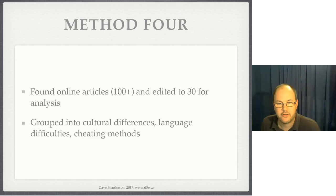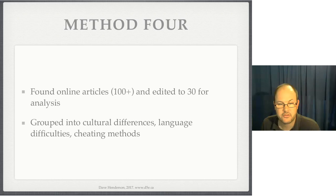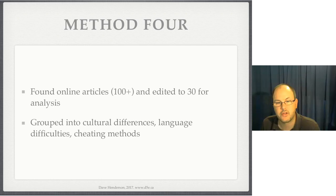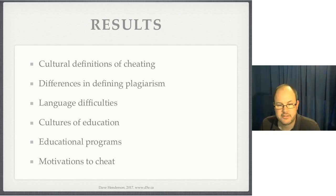I found over 100 articles. I edited them down to 30 by removing ones that dealt with English ethnicity or nationality rather than English the language. I wanted to find ones focused on academic dishonesty in North America and had to remove ones that talked about academic dishonesty in other places. I also wanted articles about situations we would be familiar with. I put them into three general groups where the reasons were related to cultural differences, language difficulties, or different cheating methods.